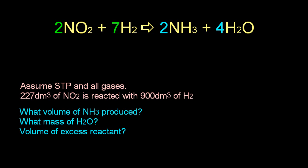For this one here, we're assuming STP and all gases. Let me put the numbers in. That's the volume of nitrogen dioxide, and 900 for the hydrogen. So I need the data for the star and the squiggle, and that should help me work out the first two.